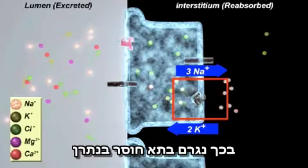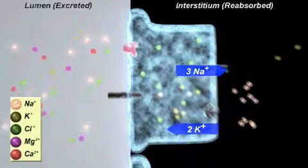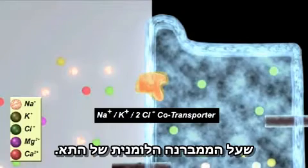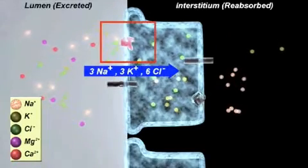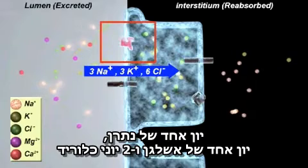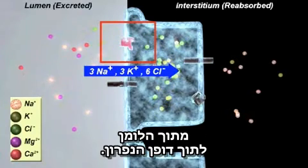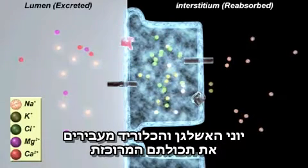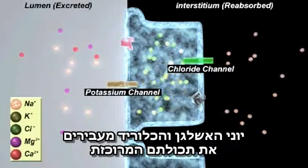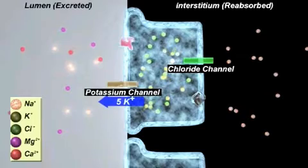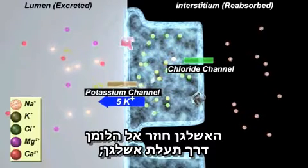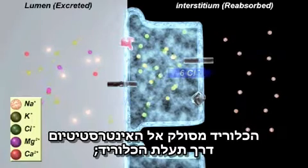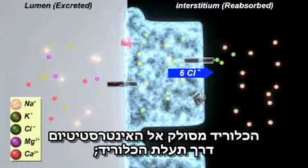This causes a deficit of sodium within the cell. This deficit is made up by the sodium-potassium-chloride transporter on the luminal membrane of the cell. This transporter moves one sodium, one potassium, and two chloride ions from the lumen into the wall of the nephron. The potassium and chloride ions move down their concentration gradients through their respective channels. The potassium returns to the lumen through a potassium channel. The chloride is removed to the interstitium through a chloride channel.